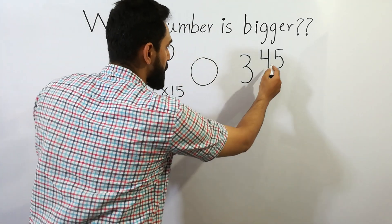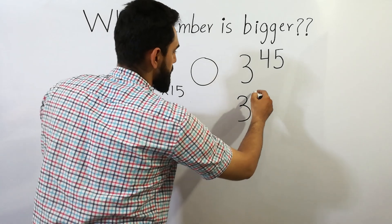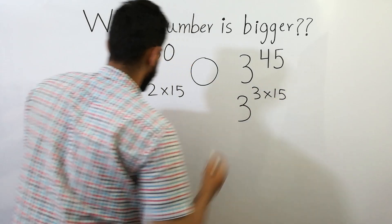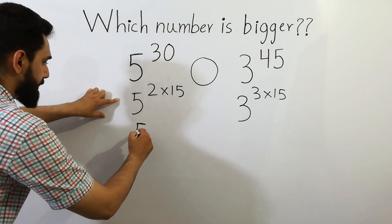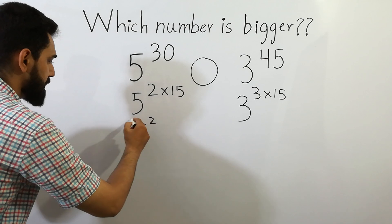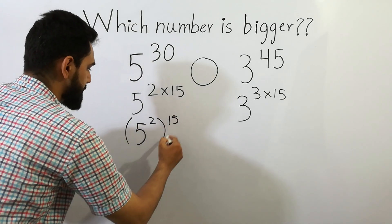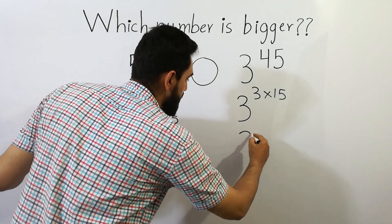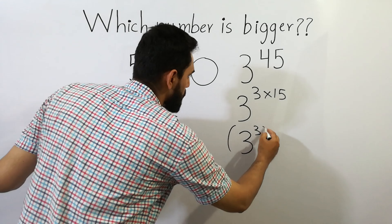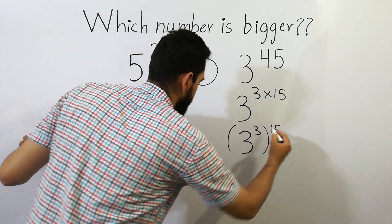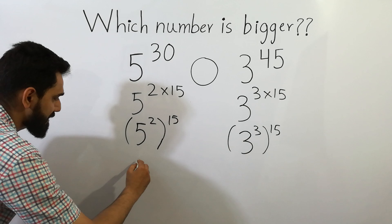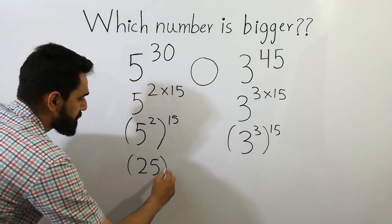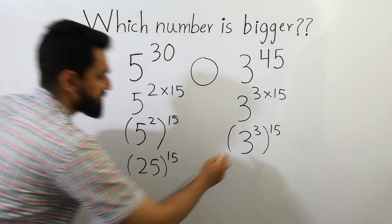and 45 can be written as 3 times 15. It is possible to write it as 5 squared to the whole power 15, and here 3 cubed to the whole power 15.